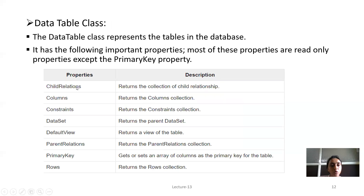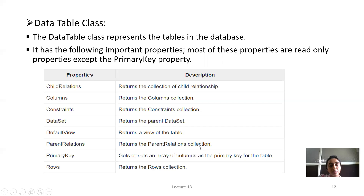The data table class has the following important properties, most of which are read-only except the primary key property. These properties are: ChildRelations, which returns the collection of child relationships; Columns, which returns the column collection; Constraints, which returns the constraints collection; DataSet, which returns the parent dataset; DefaultView, which returns a view of the table; ParentRelations, which returns parent relation collections; PrimaryKey, which gets and sets an array of columns as the primary key; and Rows, which returns the rows collection.